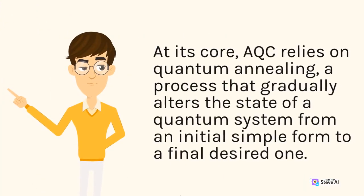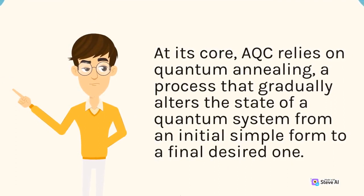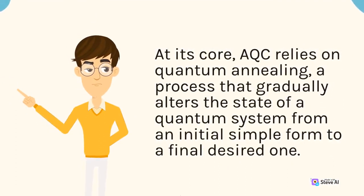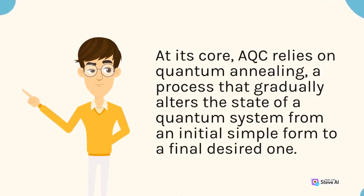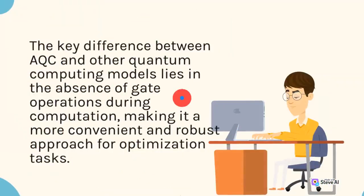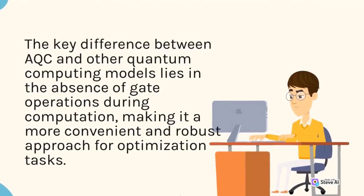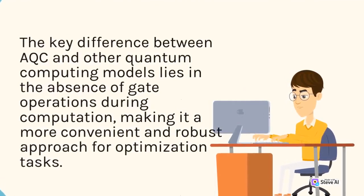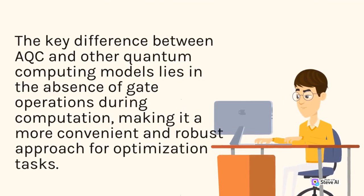At its core, AQC relies on quantum annealing, a process that gradually alters the state of a quantum system from an initial simple form to a final desired one. The key difference between AQC and other quantum computing models lies in the absence of gate operations during computation, making it a more convenient and robust approach for optimization tasks.